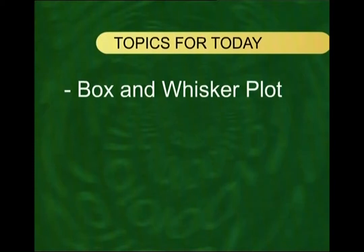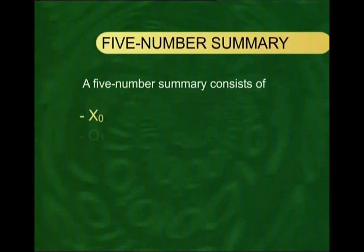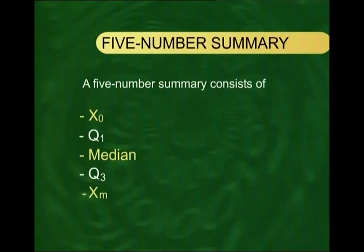Before I start the box-and-whisker plot, I would like to revise the concept of the five-number summary. For any data set, when we have acquired information regarding the central tendency, the dispersion, and the shape of the distribution, we would like to describe all these major characteristics in a summarized format. A five-number summary consists of the five quantities: x0, Q1, median, Q3, and xm.